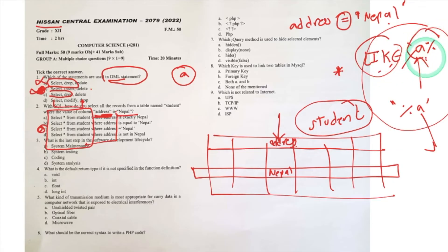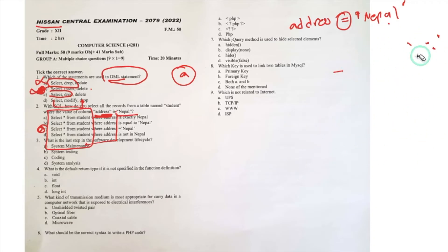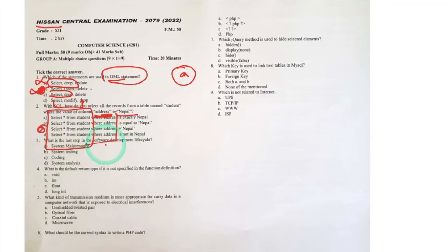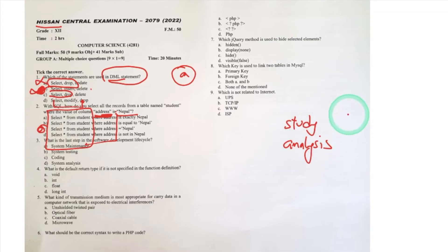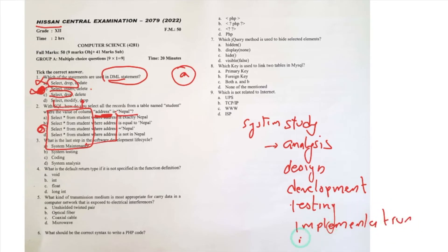What is the last step of the Software Development Life Cycle? The SDLC question is from theory. The phases are: System Analysis, Design, Development, Testing, Implementation, and Maintenance.